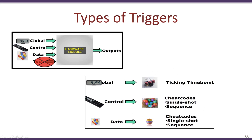In this particular work, we focus mainly on the triggers that could come through the global signals, the control signals, and the data signals. We call triggers based on global signals such as a clock a 'ticking time bomb.' Control signals could be cheat codes, either single shot or in a sequence, and data signals could again be cheat codes in a single shot or sequence. We will see how each of these triggers work and how we can design hardware modules to prevent them.